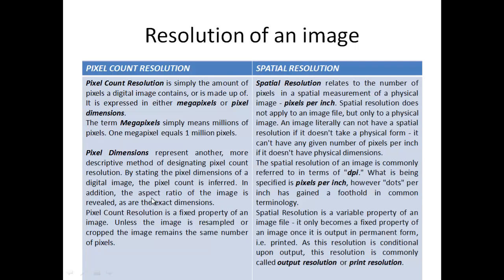Moving on to the resolution of an image. The first is pixel count resolution, which simply tells us the number of pixels in a digital image. We generally use the term megapixel to represent 1,000,000 pixels. The other term is spatial resolution, which tells us the number of pixels per spatial measurement of a physical image — for example, how many pixels per inch of an actual print. The term DPI is associated with printers and is commonly used in place of pixels per inch.